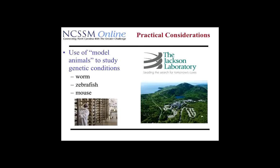The Jackson lab happens to be located in the middle of Acadia National Park — you see the picture of the lab at the bottom of that picture, and then the mountains of Acadia National Park just to the south of it. The Jackson lab, or Jax lab, primarily is a mouse lab, and they breed mice to determine and make decisions about the genetics of the mice.